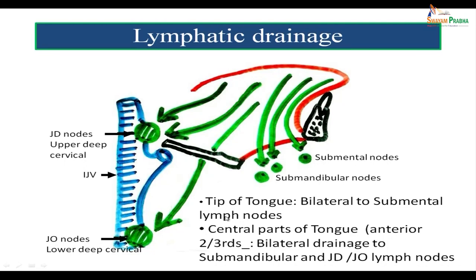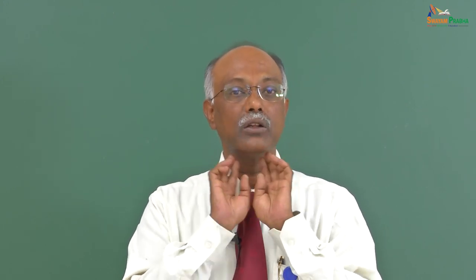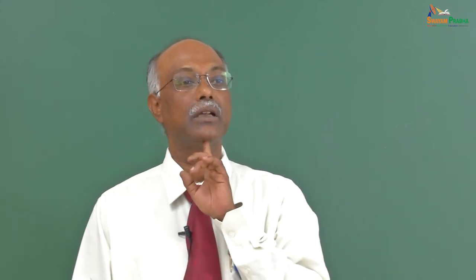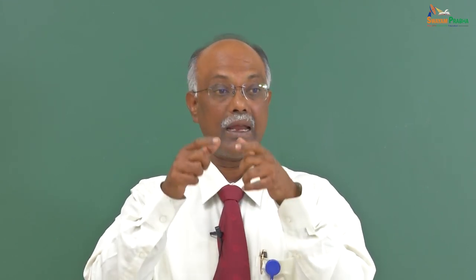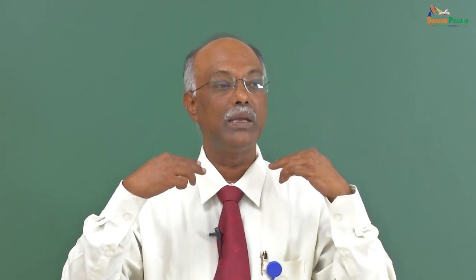The tip of the tongue has a bilateral drainage to the submental lymph nodes — lymph drains to submental nodes on both sides. The central parts of the anterior two-thirds have a bilateral drainage to the submandibular group of lymph nodes, and from there onwards to the jugulodigastric group of lymph nodes. The sides of the tongue of the anterior two-thirds drain unilaterally to the submandibular lymph nodes of the same side, and then onwards to the jugulo-omohyoid group of lymph nodes.